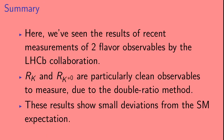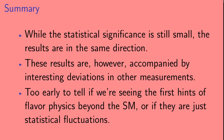To summarize: we've seen the results of recent measurements of two flavor observables by the LHCb collaboration. Rk and Rk-star are particularly clean observables to measure due to the double ratio method that LHCb uses. These results show small deviations from the standard model expectation, and while the statistical significance is still small, the results are all pointing in the same direction. Additionally, these results are accompanied by interesting deviations in other measurements. Right now it's too early to tell if we're seeing the first hints of flavor physics beyond the standard model, or if these are just statistical fluctuations that will go away in time.